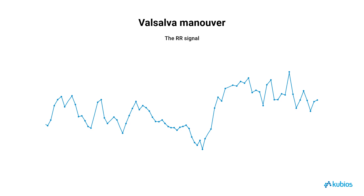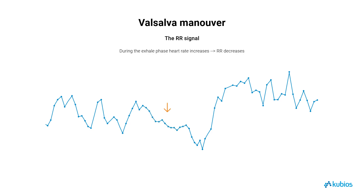During the initial phase of the Valsalva maneuver, heart rate typically increases due to heightened sympathetic nervous system activity. This sympathetic response is initiated by a transient reduction in aortic blood pressure, a consequence of the increased intrathoracic pressure diverting blood away from the heart. Immediately following the forced exhalation, heart rate may continue to rise briefly, influenced by both the natural inspiratory reflex, which induces vagal inhibition, and the somewhat delayed response of the sympathetic nervous system.